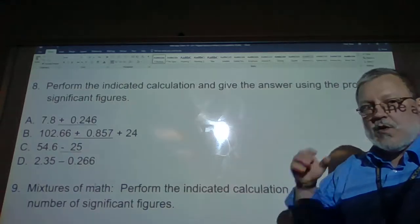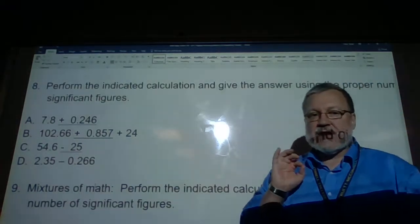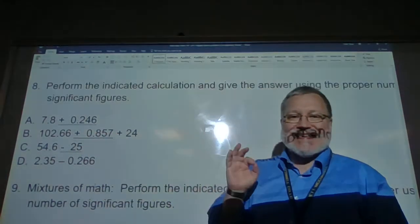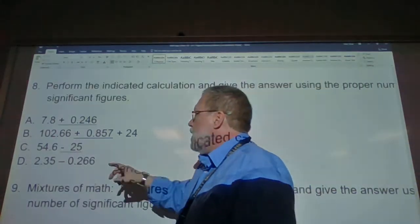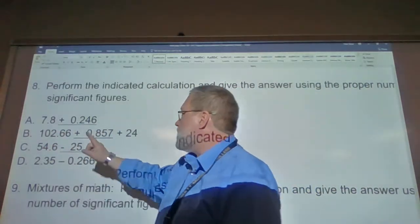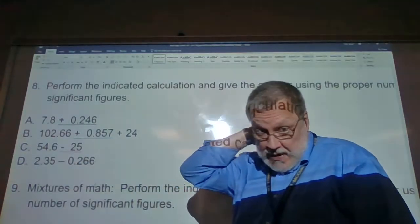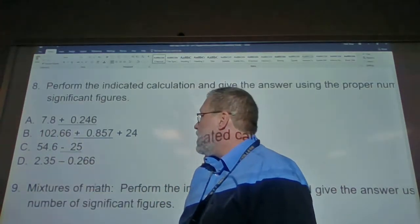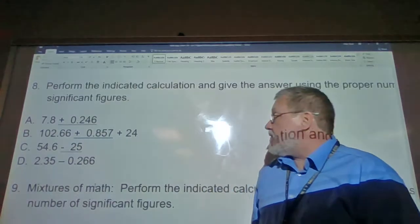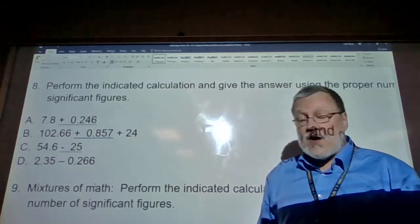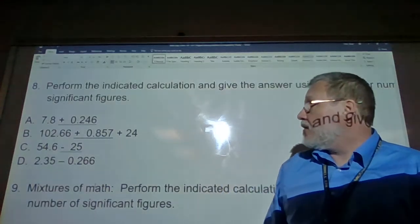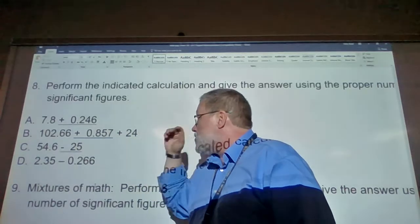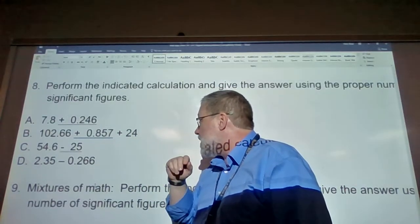For addition and subtraction, we're looking at total digits past the decimal point — not sig figs. You look at the value with the fewest digits past the decimal point. For 0.8 and 0.246: 0.8 has one digit past the decimal point, so we're limited to one digit past the decimal point. For 102.66, 0.857, and 24 — since there is nothing past the decimal point in 24, we can't report anything past the decimal point, so the answer rounds to 128.